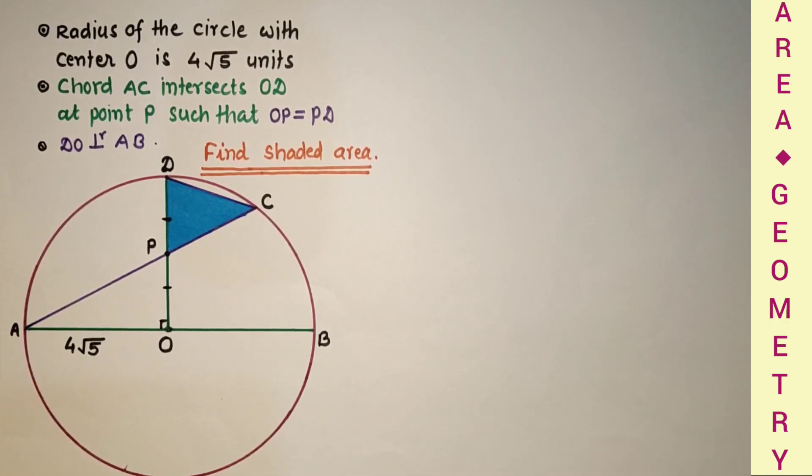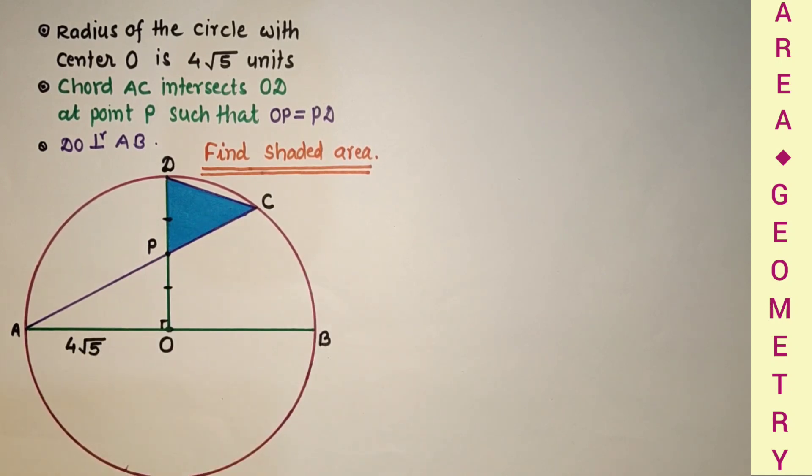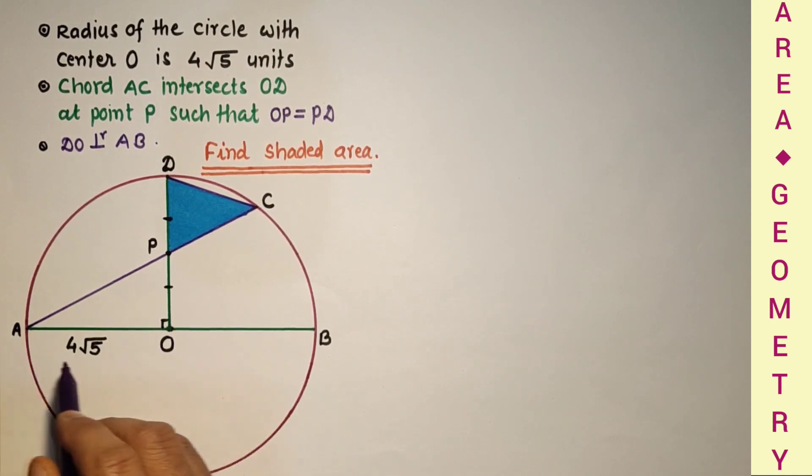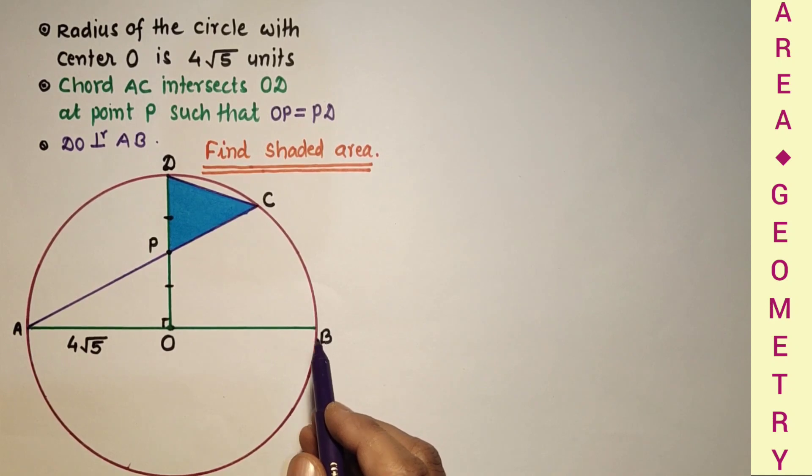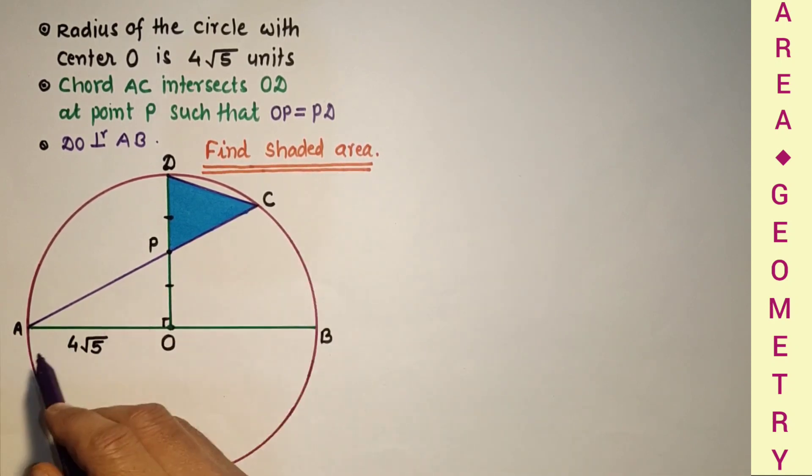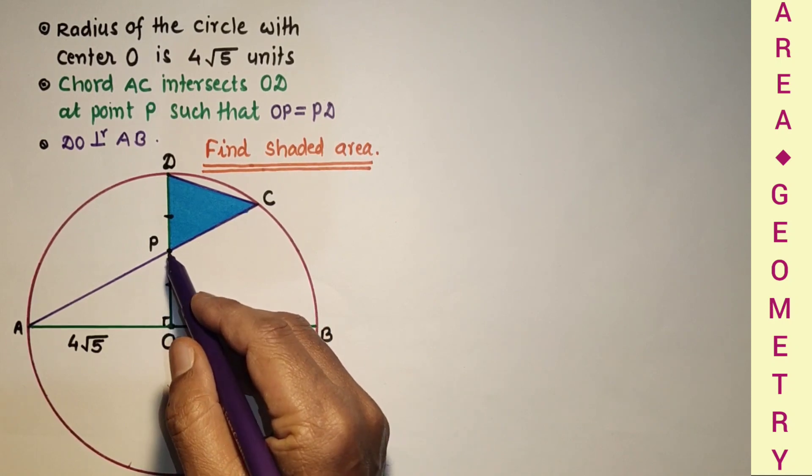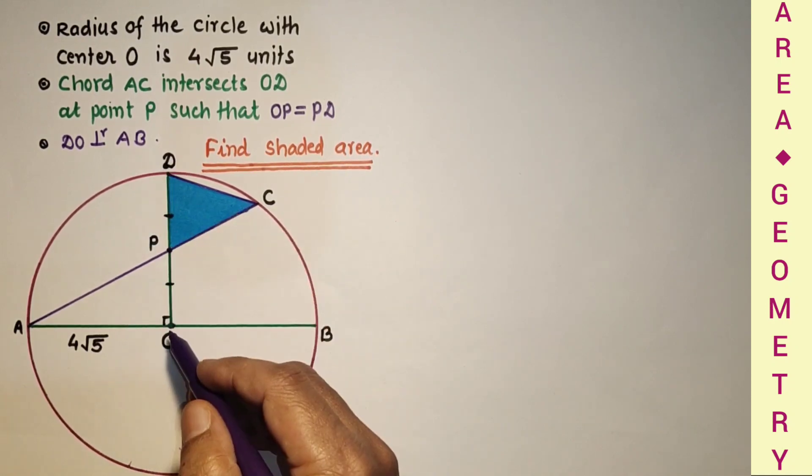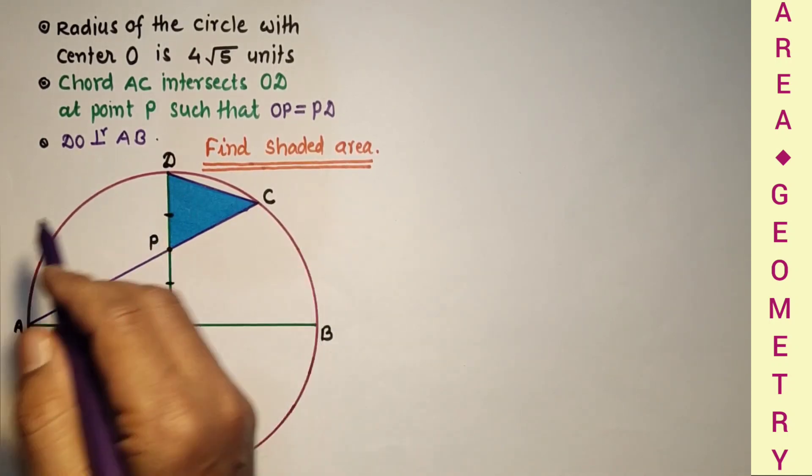Hi everyone, today we will discuss about this shaded area. We are given a circle with center O and radius of the circle is 4 root 5 units. This AB is diameter. This radius OD is perpendicular to AB. This chord AC is intersecting this radius at point P such that this point is midpoint of OD, means OP is equal to PD. And we have to find the area of this shaded triangle.